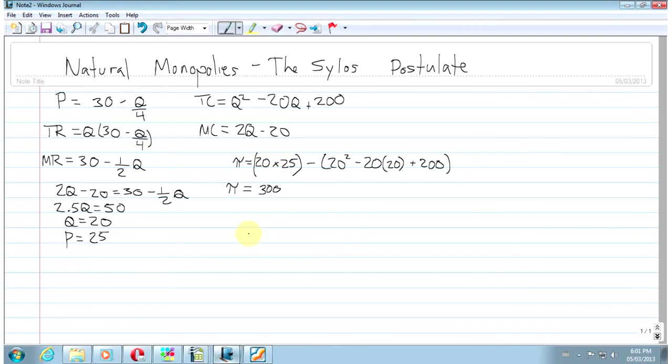So profit is 300. So we've got the profit of the original monopolist, we've got his price, and we've got his quantity.